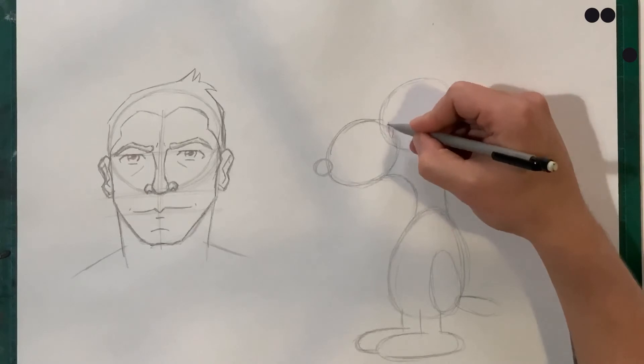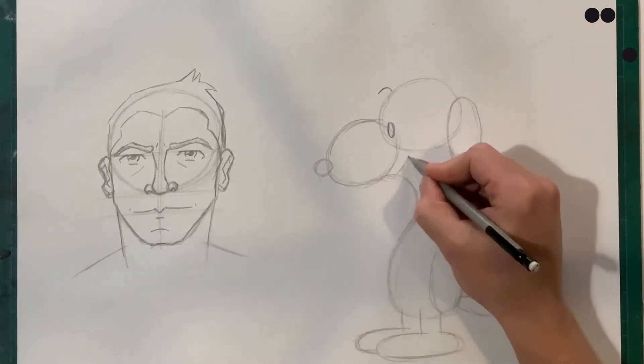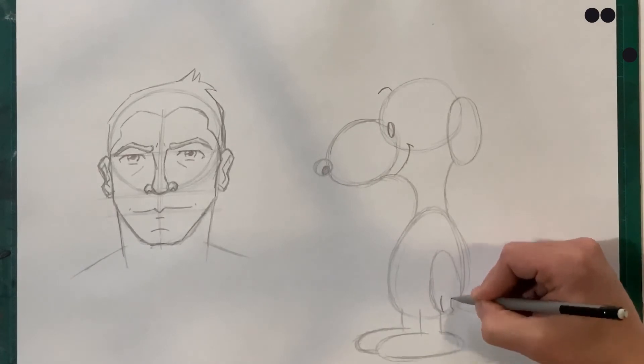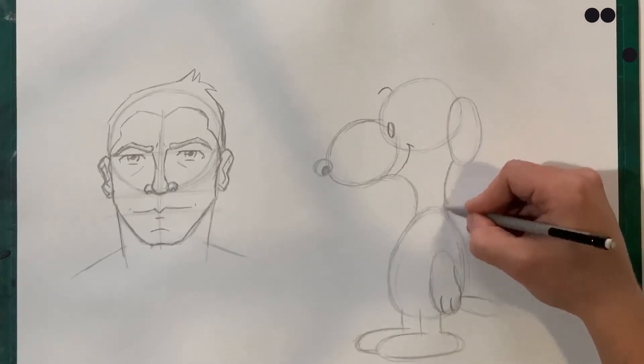Once we have that basic form in, I'm going to go over with my pencil and just add in those other details - details such as his collar, the eye, the mouth, and that little strand of hair on top of his head.